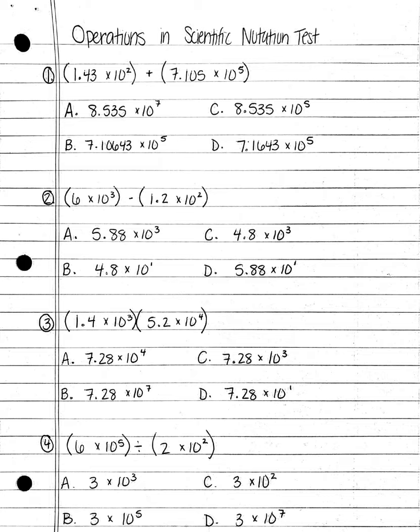Number 2. 6 times 10 cubed minus 1.2 times 10 squared: A. 5.88 times 10 cubed; B. 4.8 times 10 to the first power; C. 4.8 times 10 cubed; or D. 5.88 times 10 to the first power.